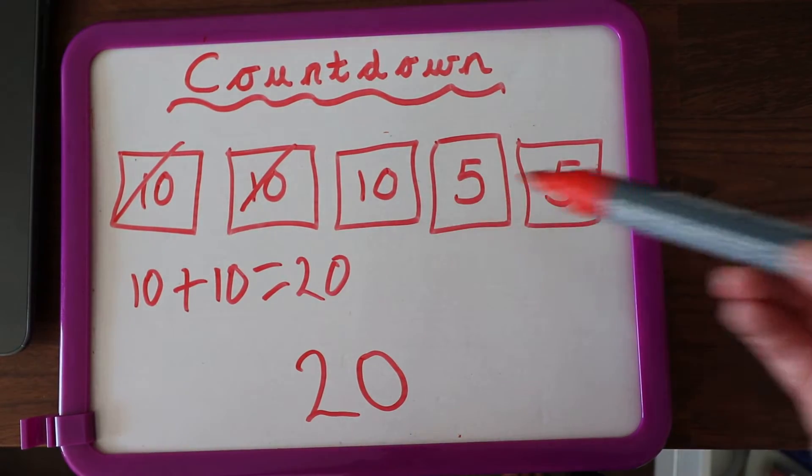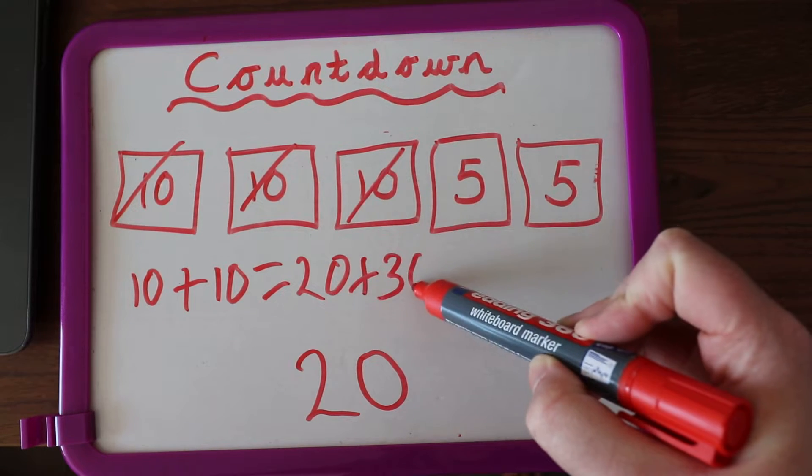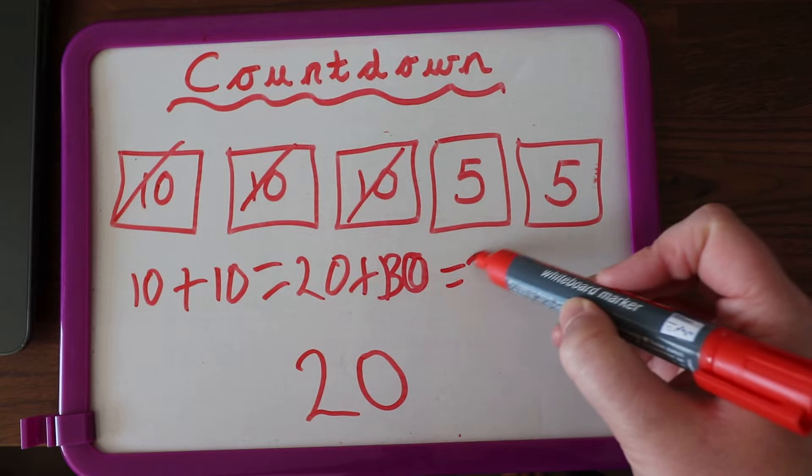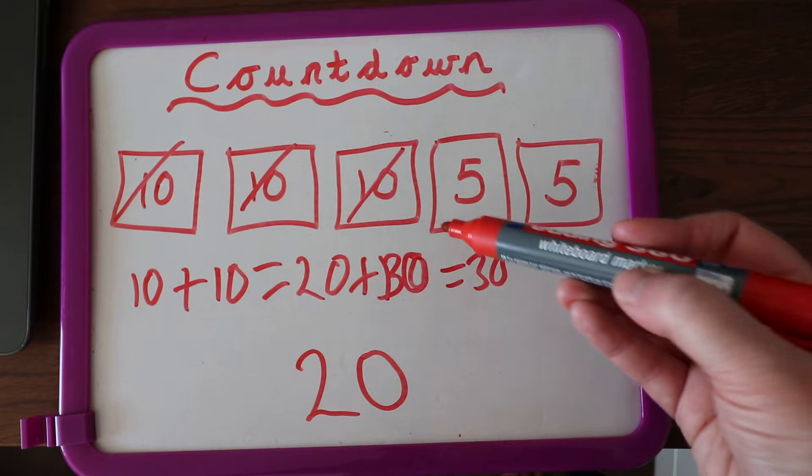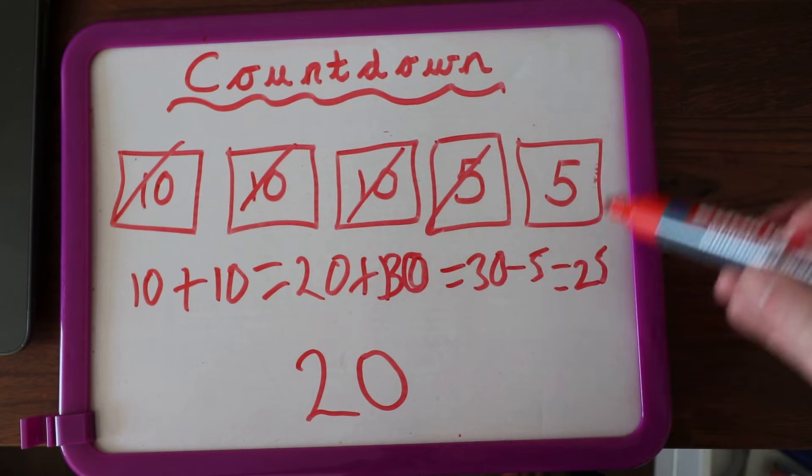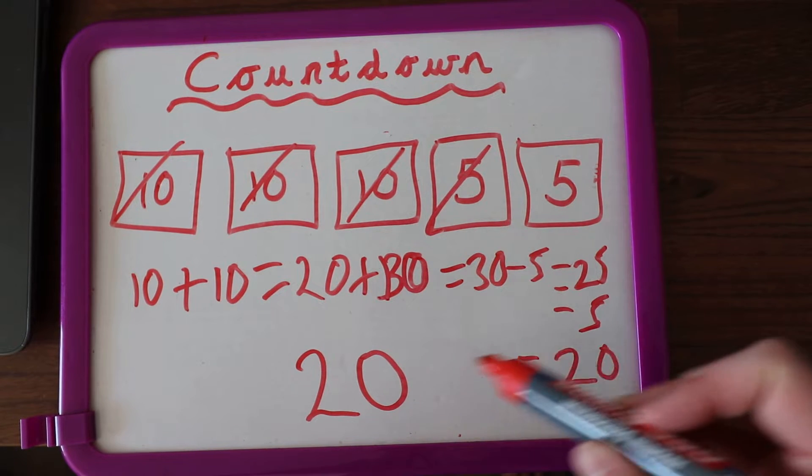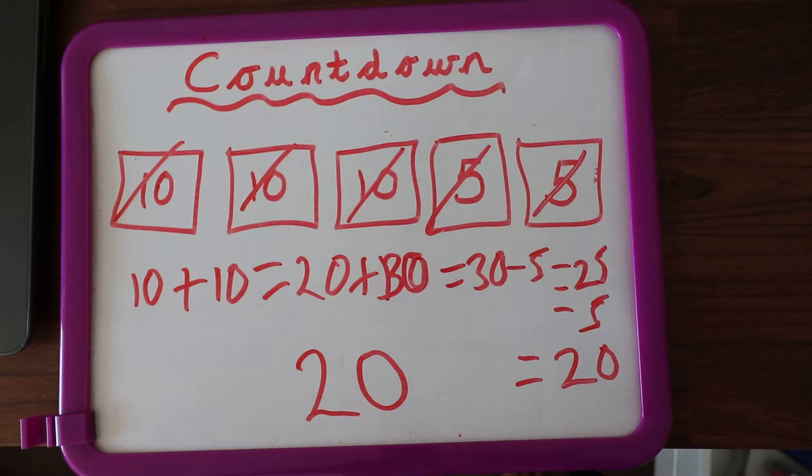But I've got to use these up. Plus 10 is 30. Then I could take away 5, that makes 25, and take away another 5 makes 20. Well done if you got that right. Okay, ready for the next one?